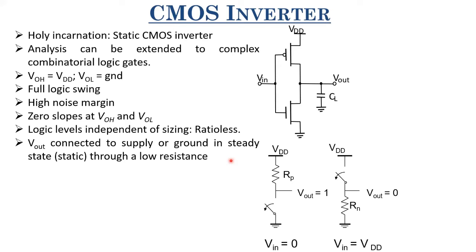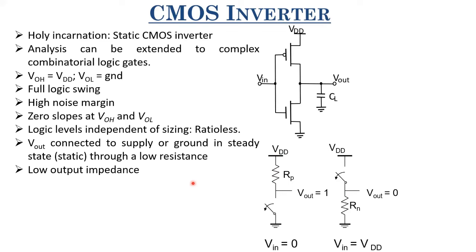At any point during static operation — when input is fixed at zero or Vdd — the output node is either connected to Vdd through small resistance R_P or to ground through small resistance R_n. So in steady state the output node is always connected to either Vdd or ground by a small resistance, implying very low output impedance. Low output impedance means we can drive multiple fanouts.